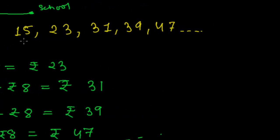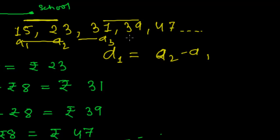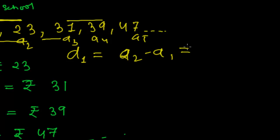We have already learned that to be an arithmetic progression or arithmetic sequence, the common difference between any two consecutive terms must be constant throughout. So let me find the common difference between 15 and 23. This is a1, this is a2, a3, fourth term, fifth term, and so on. Common difference between first and second term: 23 minus 15, that is 8.